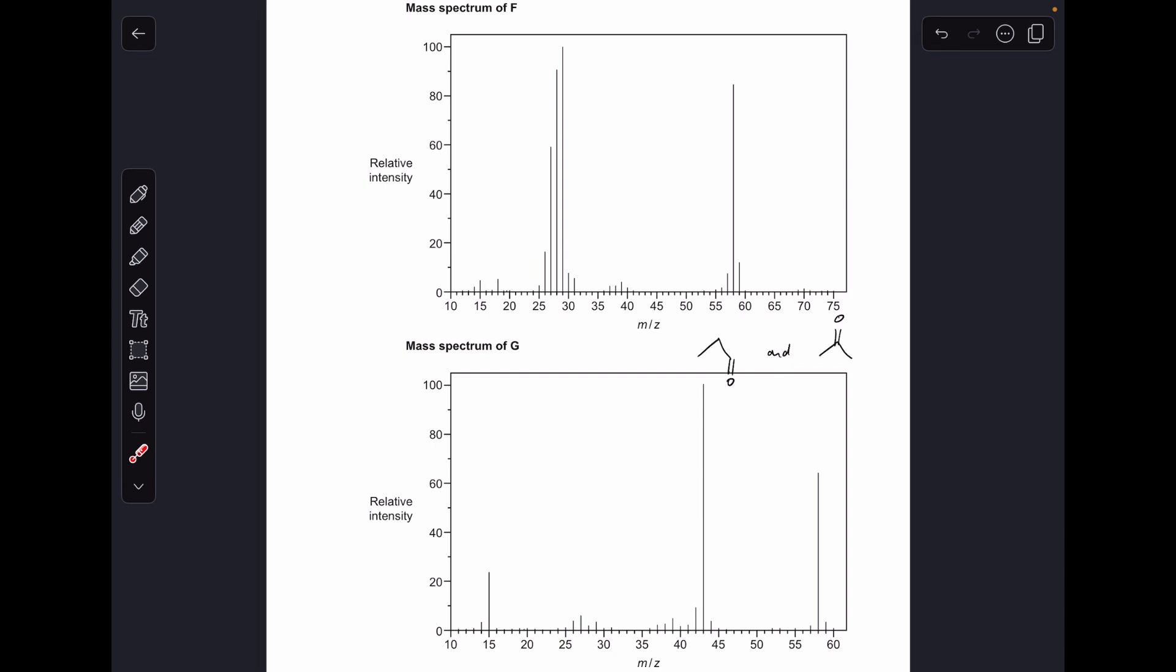So the other obvious one is the peak in F at m/z 29, so this really tall one here. Now only one of these two molecules can actually form a peak at 29 and it's this one here.